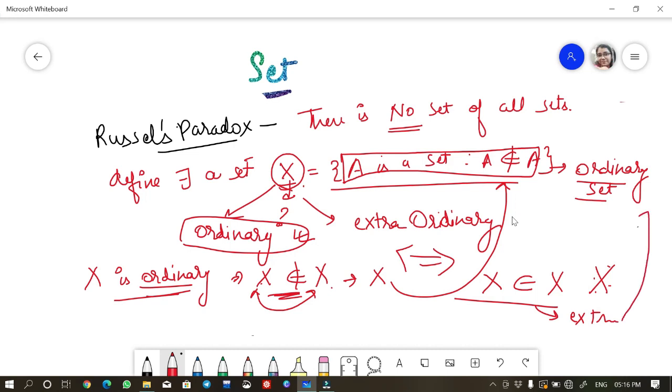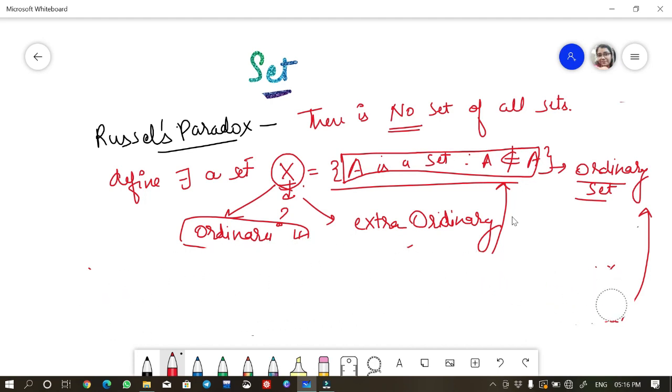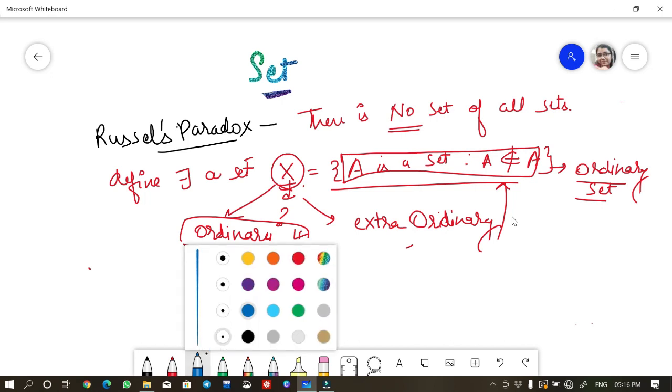What I considered is, let me explain it one more time so that you understand it better. So if I consider this X, if I consider this to be, this X can be any set. It can be ordinary set.